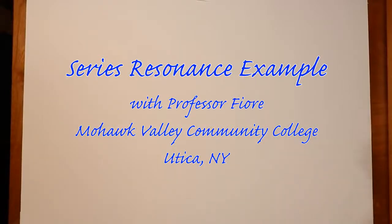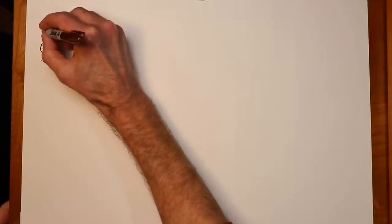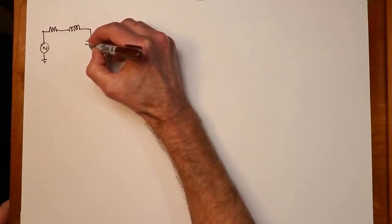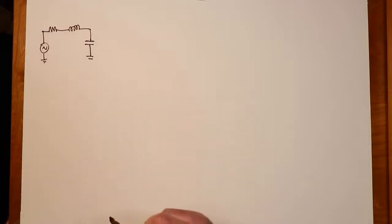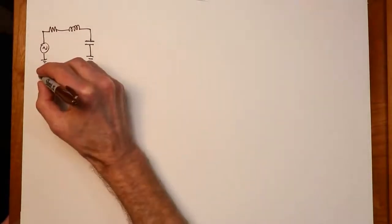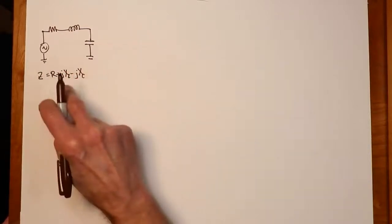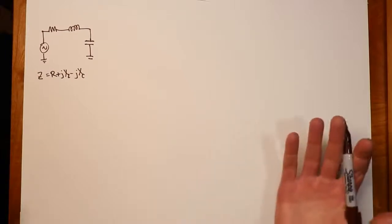We're back with an example of series resonance. We indicated last time with a simple series network consisting of a voltage source, some resistance, an ideal inductor, and a capacitor, there would be some particular frequency where X_L and X_C would be equal — they basically cancel out — and what that leaves us for system impedance is just the value of R. In general, the system impedance is Z = R + jX_L − jX_C, so at some particular frequency X_L and X_C cancel out and Z equals R.